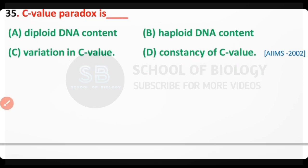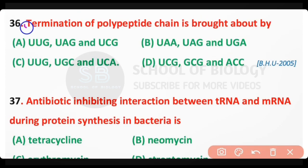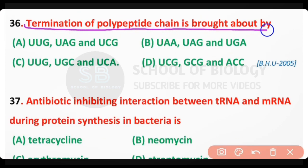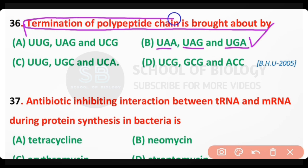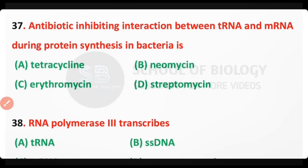Question number 36: The termination of a polypeptide chain is brought about by which codon? The correct answer is option B: UAA, UAG, and UGA are stop codons and cause the termination of the polypeptide chain.